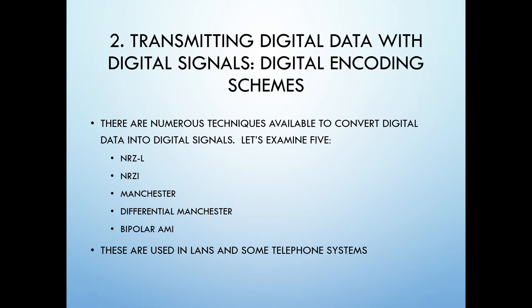To transmit digital data using digital signals, the ones and zeros of the digital data must be converted into the proper physical form. This digital to digital conversion is called digital encoding. So for each data bit like 0 or 1, a certain voltage level like 0 and 5 volts are usually used.